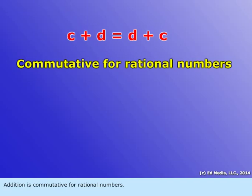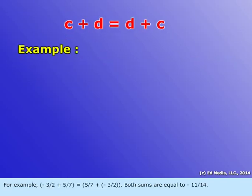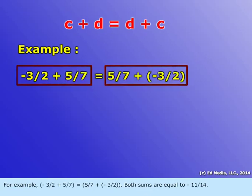Addition is commutative for rational numbers. For example, negative three-halves plus five-sevenths is equal to five-sevenths plus negative three-halves. Both sums are equal to negative eleven-fourteenths.